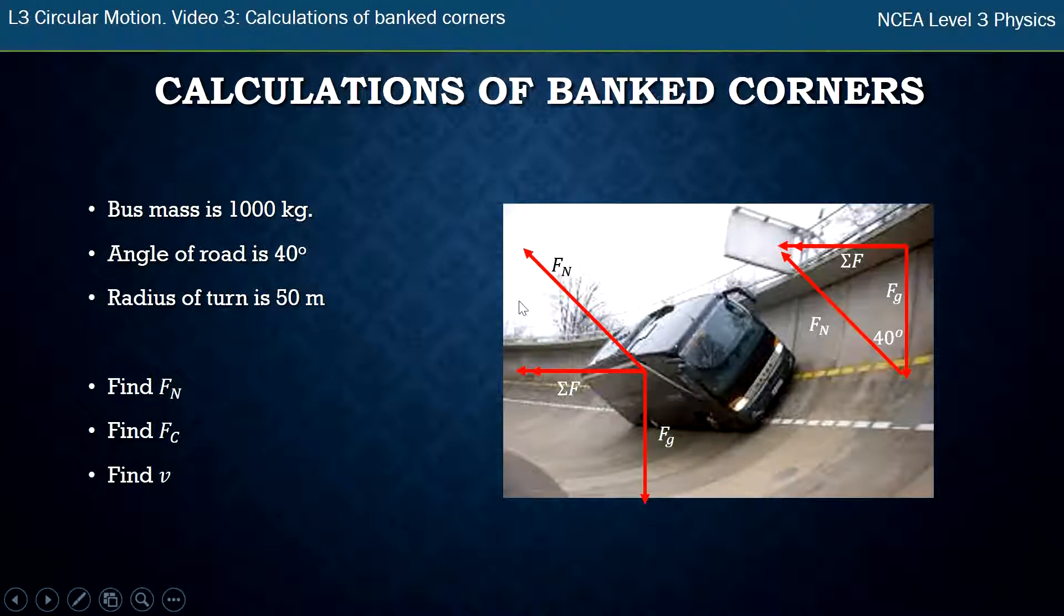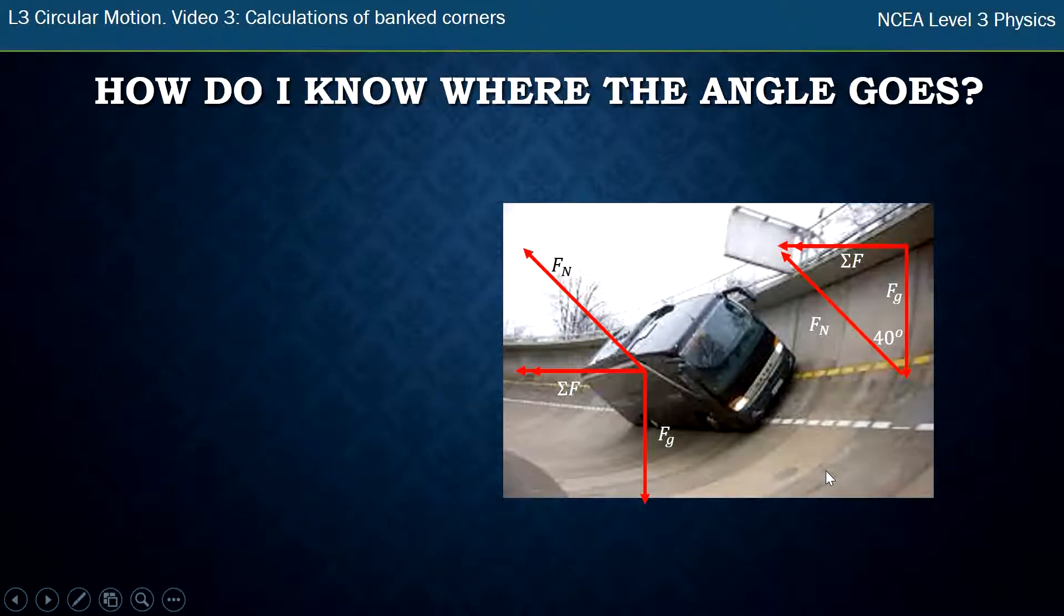We've been told the angle of the road is 40 degrees and I've put the angle of this triangle in here as 40 degrees. So the first question is how did I know that's where the angle goes? This is the first skill that you need to be able to do.